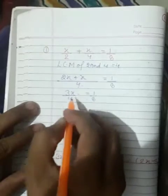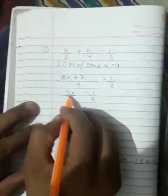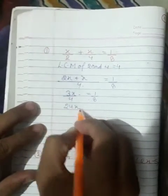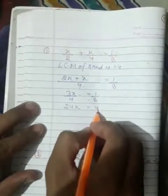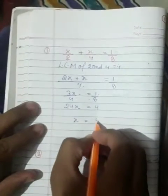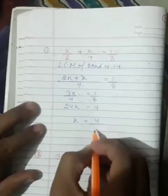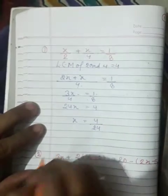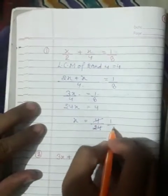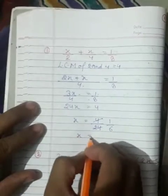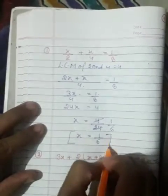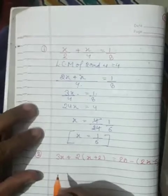After using cross multiplication: 3 multiplied by 8 is 24, and x multiplied by 4 is 4. So x is equal to 4 upon 24. Reducing: 4 divided by 4 is 1, and 24 divided by 4 is 6. Therefore x is equal to 1 by 6. This is our answer.